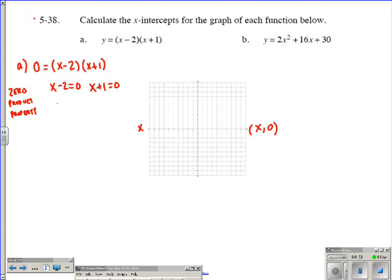x minus 2 equals 0. Obviously, x would equal 2. So we're talking about the point 2, 0. And on this one, we subtract 1 from each side. And we get x equals negative 1. So the other point we're dealing with is the point negative 1, 0.